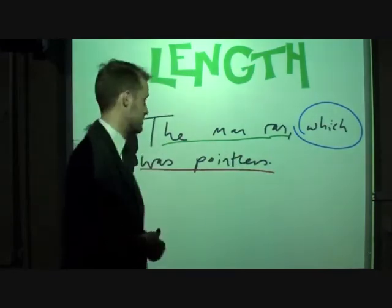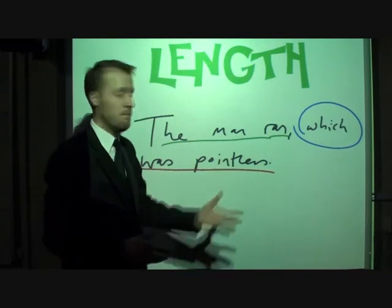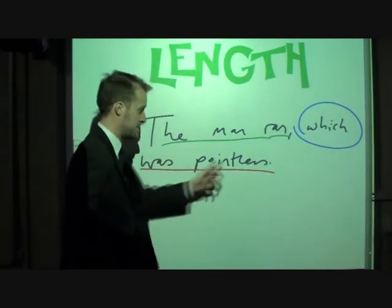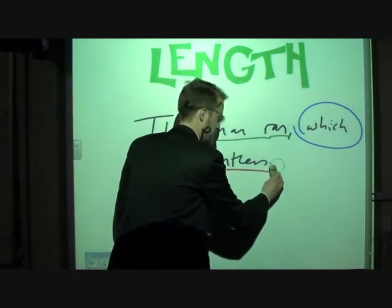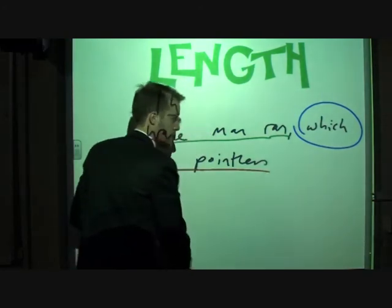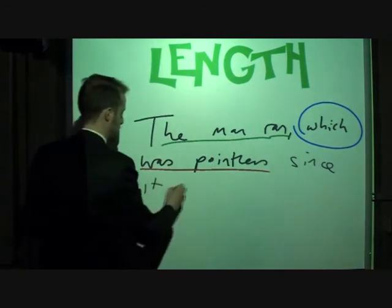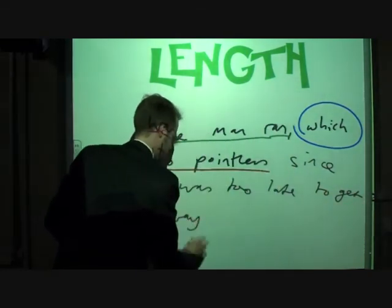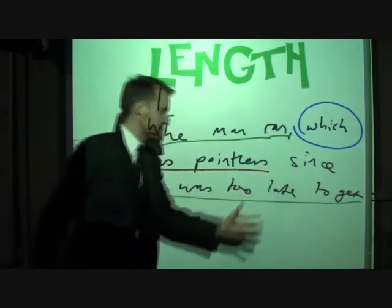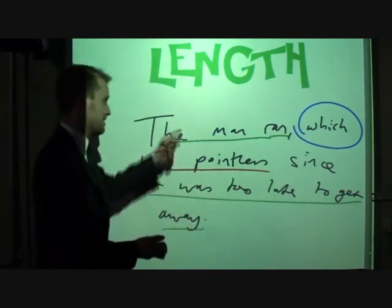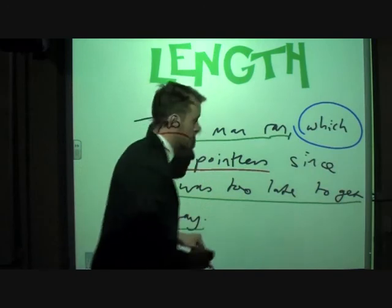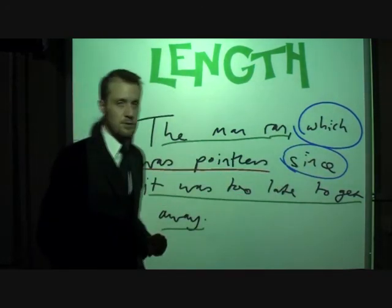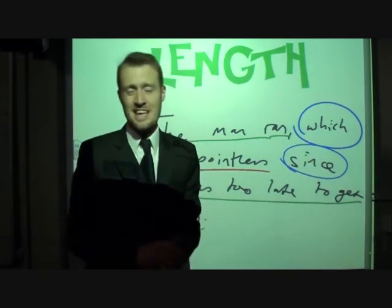One way of doing it is to use a compound-complex sentence. 'The man ran, which was pointless' is a complex sentence — you've got 'the man ran', which makes sense on its own, a subordinating linking word like 'which', and 'was pointless' as a subordinate clause. But I can knock the full stop off that and add another linking word like 'since', then add 'it was too late to get away.' Now 'it was too late to get away' is a main clause on its own. So I've got: 'The man ran, which was pointless, since it was too late to get away' — two main clauses and a subordinate clause. Have a play around with it. Really, the only way to get better is to practice.